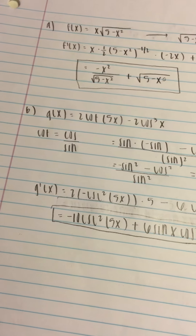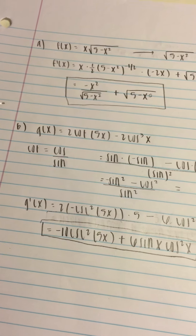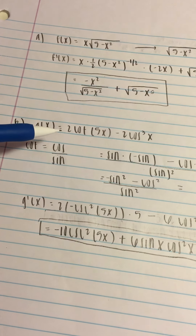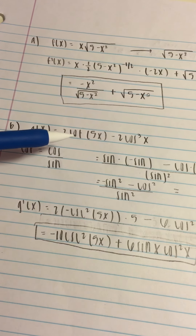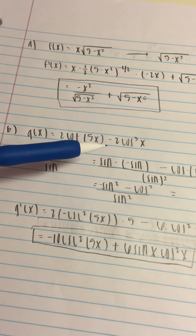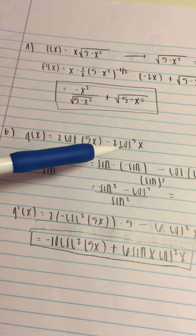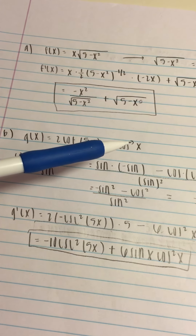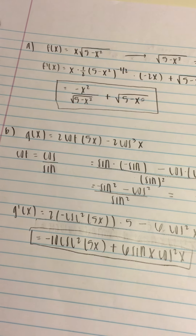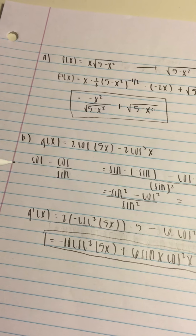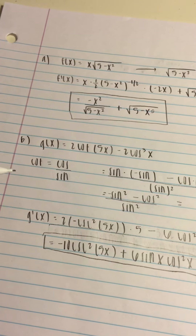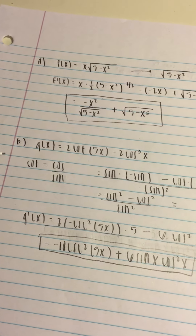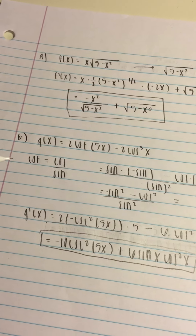For part b, we are given g of x equals 2 cotangent 5x minus 2 cosine to the third power x. To solve this, we're going to have to use the chain rule.